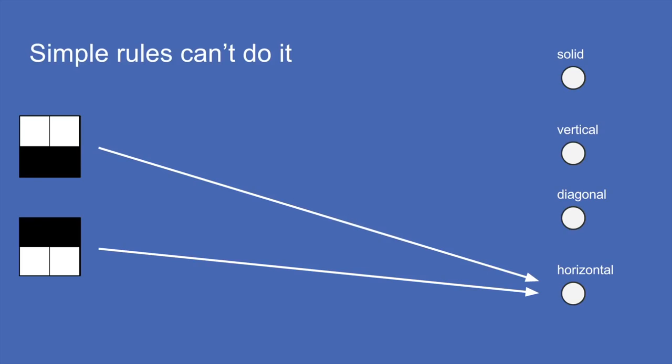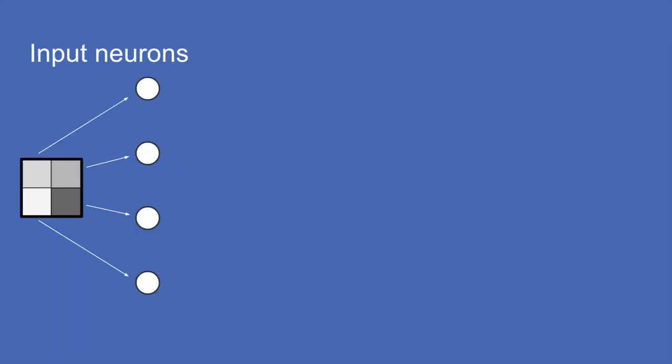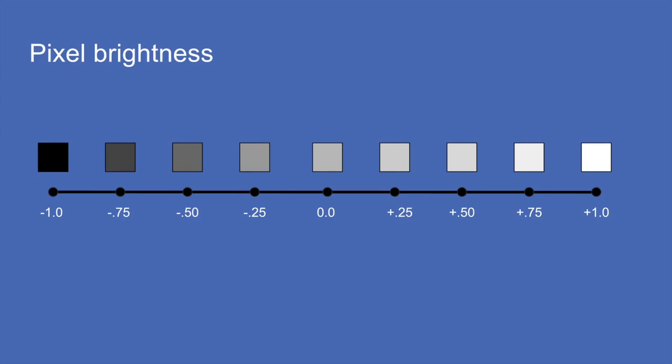To do this with a neural network, you start by taking all of your inputs — in this case four pixels — and break them out into input neurons. You assign a number to each depending on the brightness or darkness of the pixel: plus one is all the way white, minus one is all the way black, and gray is zero right in the middle.